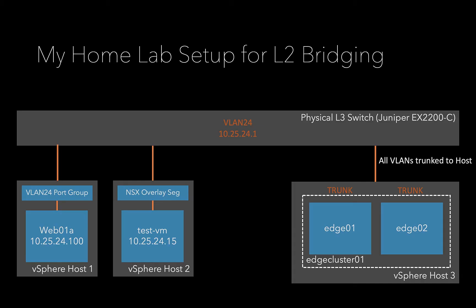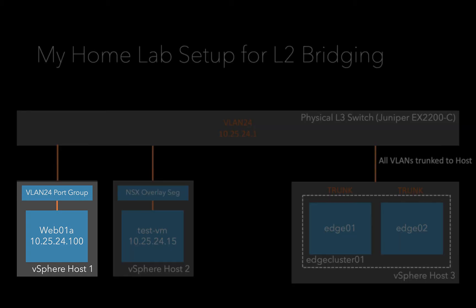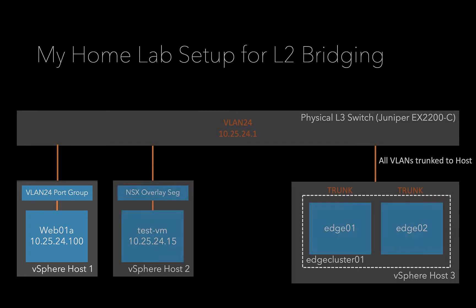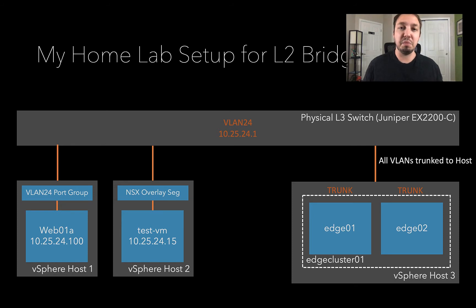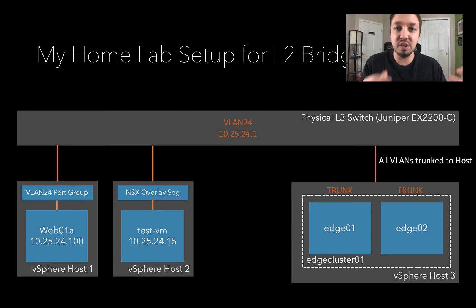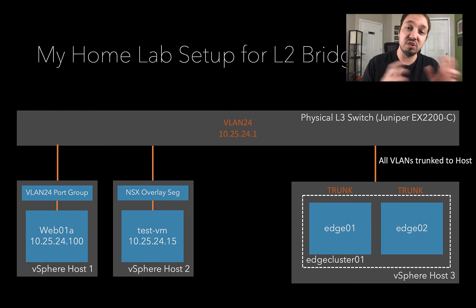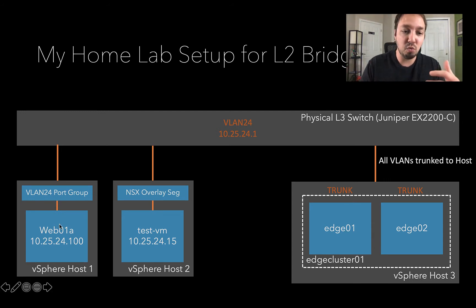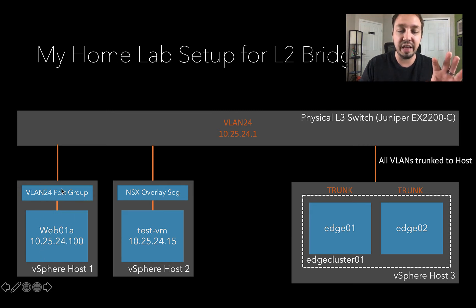Starting on the bottom of the diagram, we have Web01A with IP address 10.25.24.100. This is a virtual machine sitting on a vSphere host, and this is what I'd consider the legacy environment. The reason people implement layer 2 bridging is usually because they want to implement NSX-T but are concerned about who owns the network and where the default gateway lives. You're not going to just flip a switch — you'll have a period of coexistence with your original VLANs. Web01 is on a VLAN port group on a standard switch, which could also be a distributed switch or even a physical server. This is the brownfield environment.